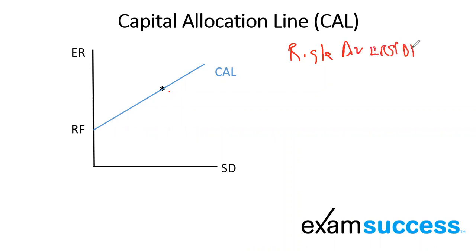So where an investor is on this allocation line is based upon their attitude towards risk. A highly risk-averse individual will have an allocation down here, somewhere down here. This is more weighting towards risk-free assets. An investor that has a higher tolerance for risk or a lower risk aversion, make sure you know that difference, they will be somewhere over here.